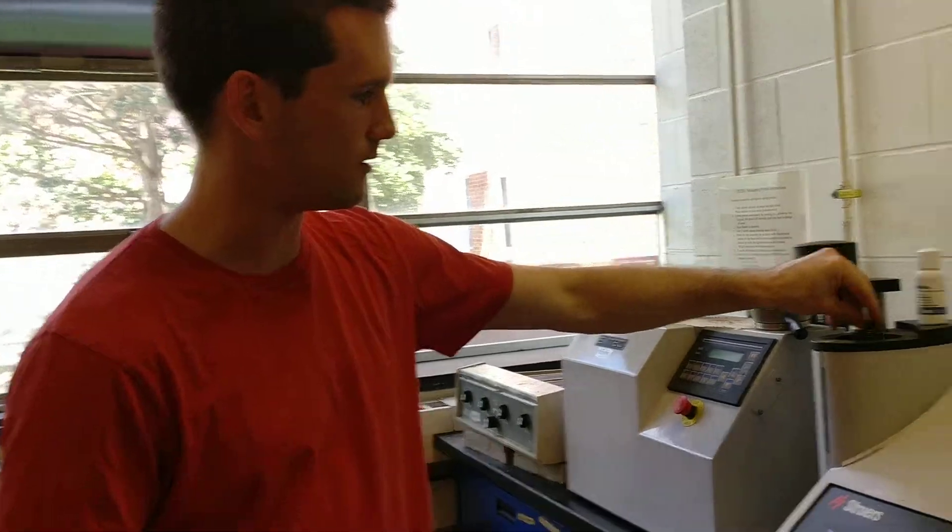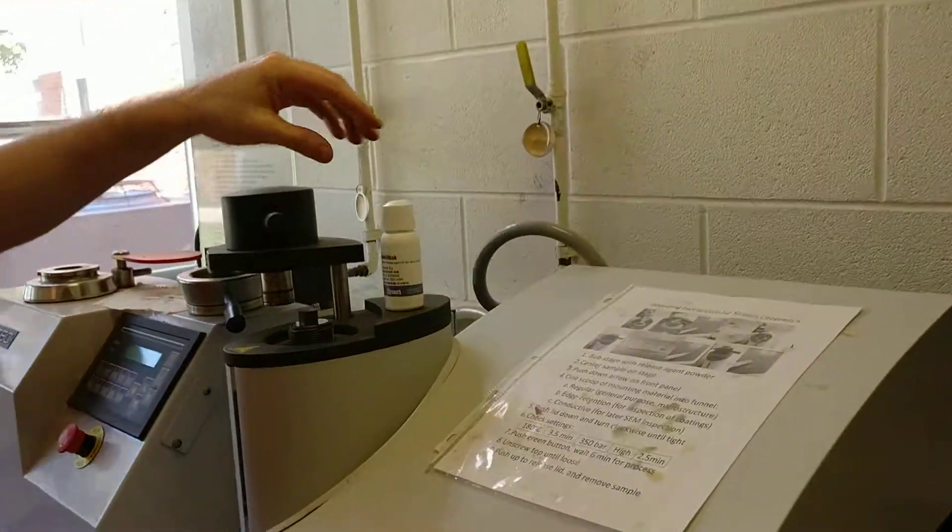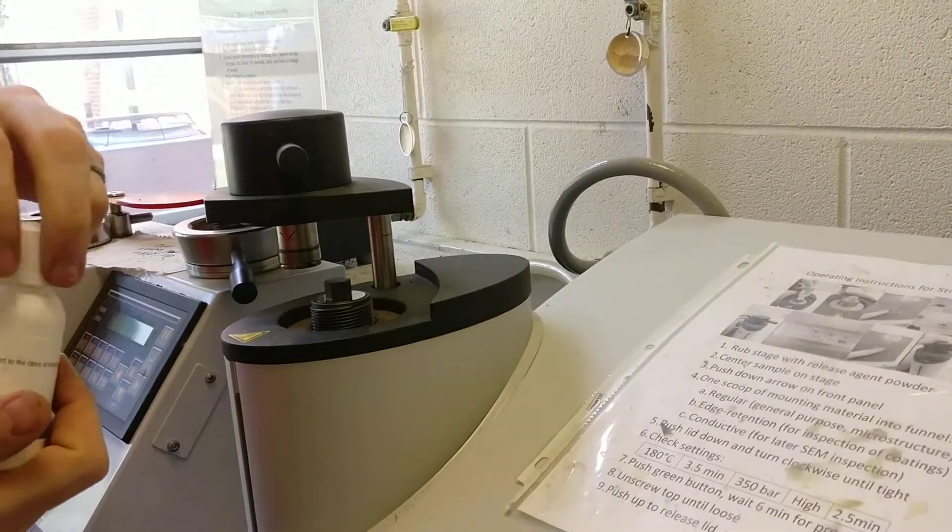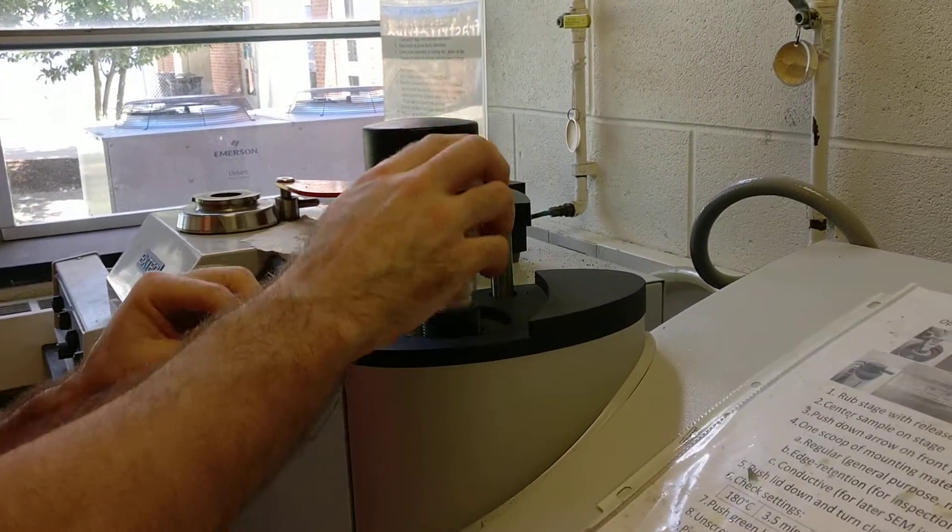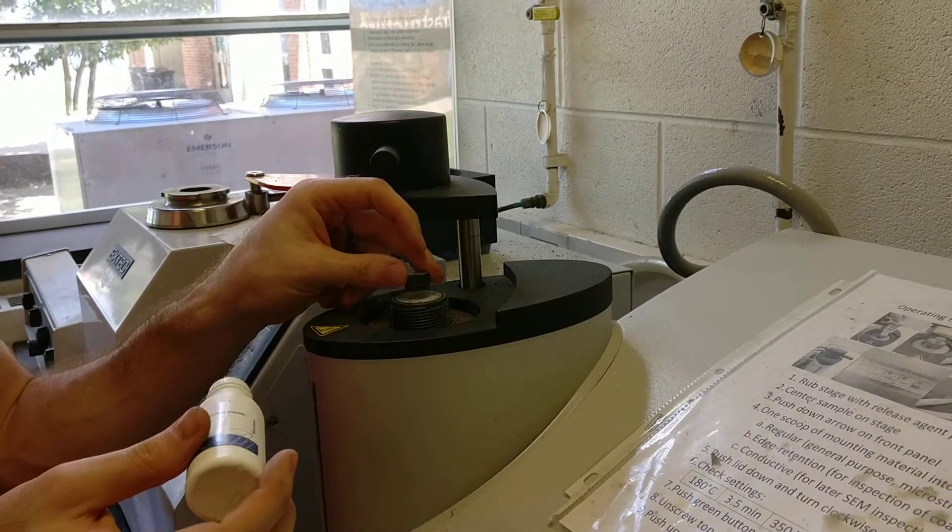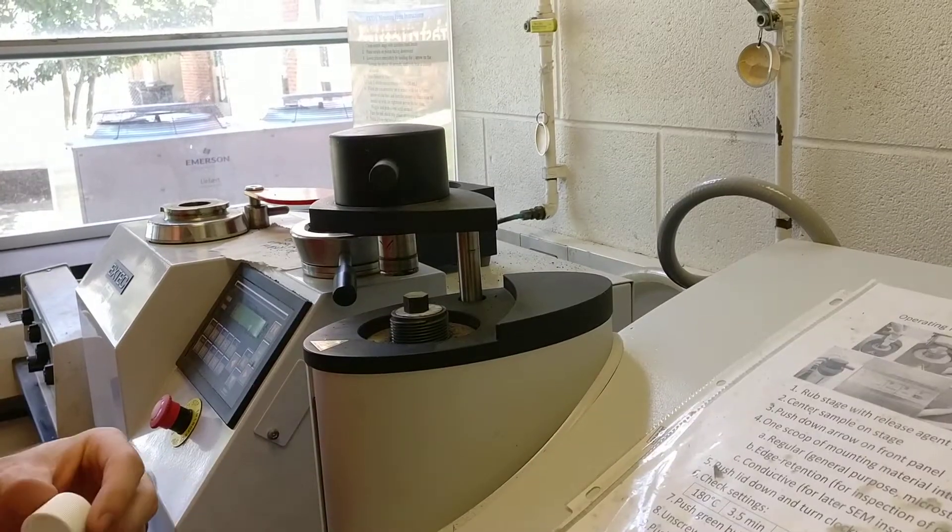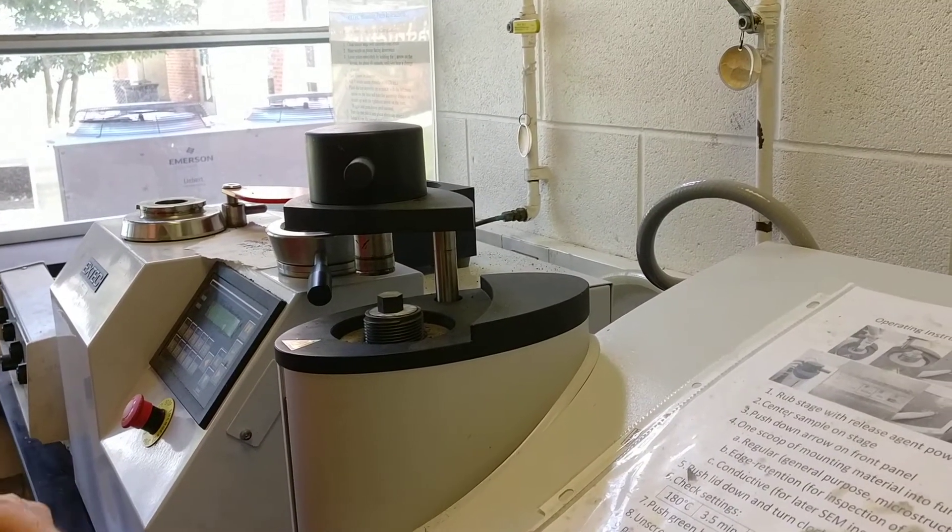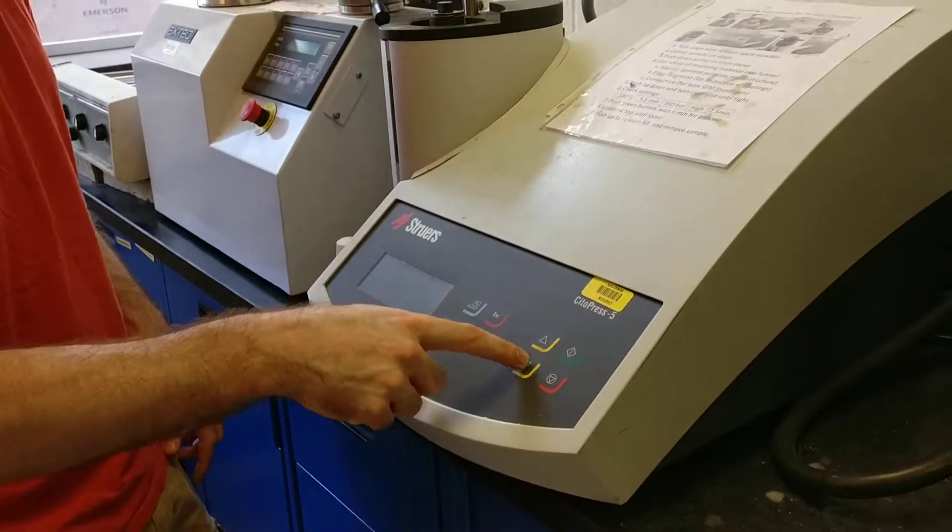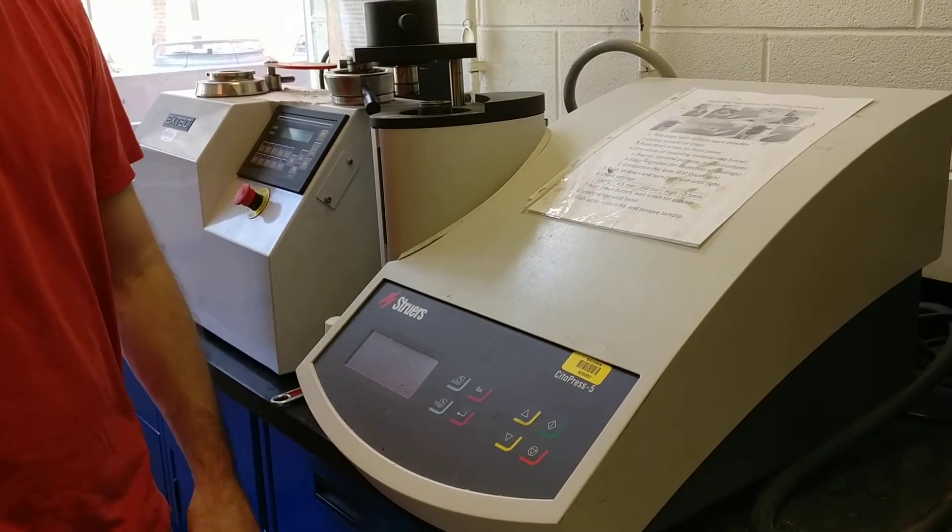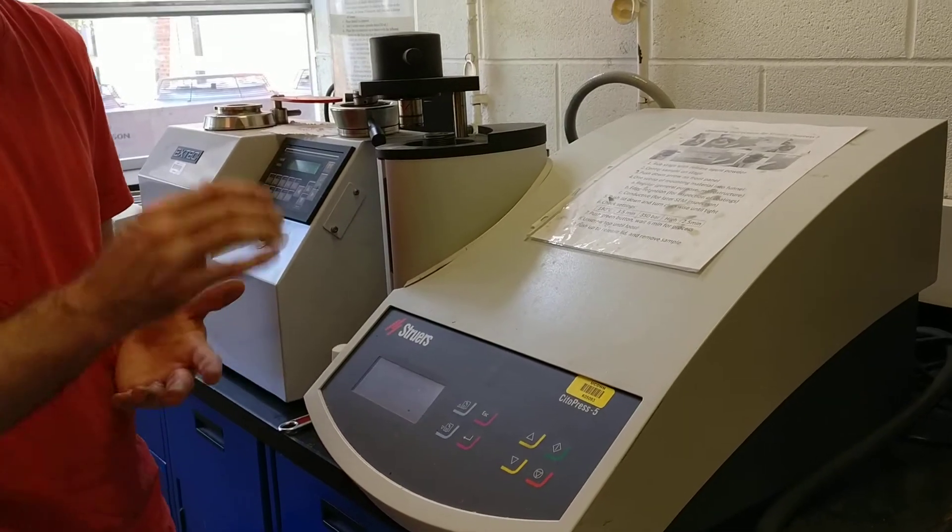Next you want to mount the flat side down onto this sheet. There's this anti-stick stuff that's kind of like a talc powder so you can put that on before you put your piece on to get it to release easier. The next thing you want to do is touch the down arrow here. That will lower your piece with hydraulics.